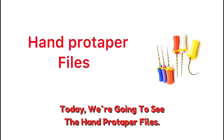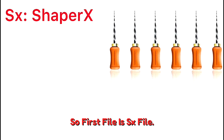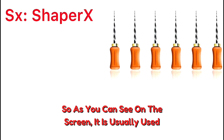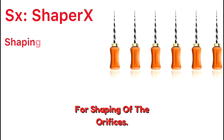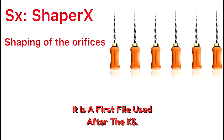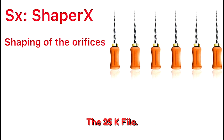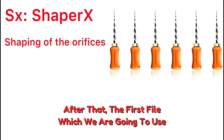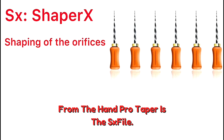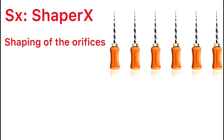Today we are going to see the hand ProTaper files. The first file is the SX file, which, as you can see on the screen, is used for shaping of the orifice. It is the first file used after the K-file — we have to negotiate the canal with the help of a 20 or 25 K-file, and after that the first file from the hand ProTaper we use is the SX file.